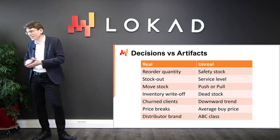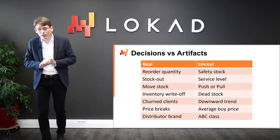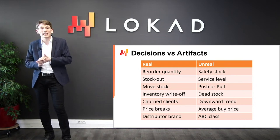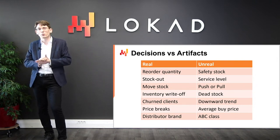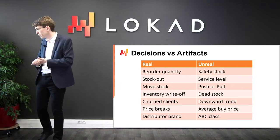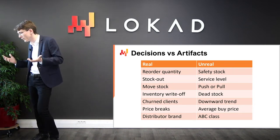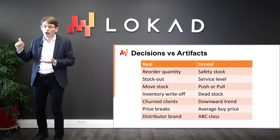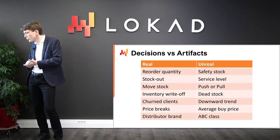No supplier will sell you anything at the average buy price. The only reality is that you compose a purchase order, pick quantities, and depending on those quantities you will be able to leverage price breaks that your suppliers may offer, getting purchase prices based on those price breaks and whatever you negotiate on top. The average buy price is not real. Beware of not taking those numerical artifacts as if they had some kind of fundamental truth to them.